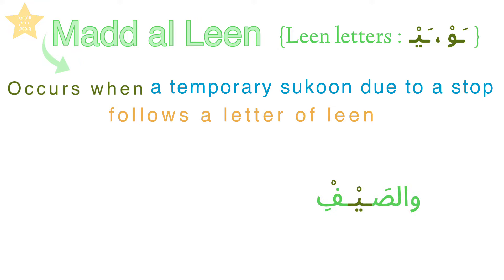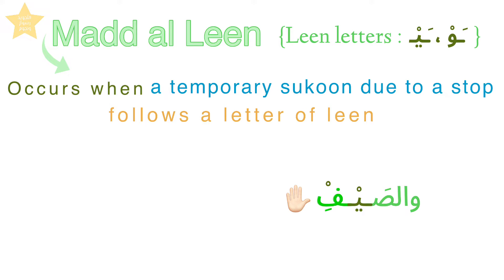والصيف — the yaa here is a letter of lean. The faa after it carries a temporary sukun because we stopped on it. The original haraka of the faa is kasra, and it changed to a sukun due to a stop. So here it is called a maddillin.